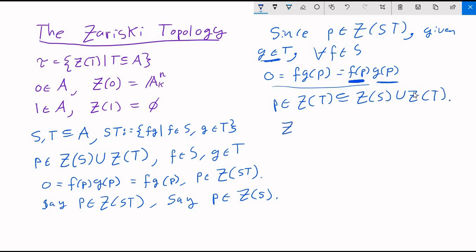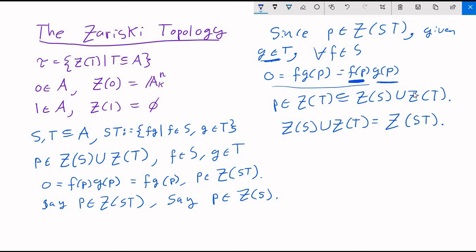But that tells us then that the union of the algebraic sets ZS and ZT, this is itself an algebraic set. And so we find that the union of two closed sets is a closed set. So all that remains to do is to check that arbitrary intersections of closed sets remain closed.